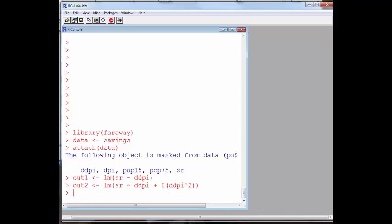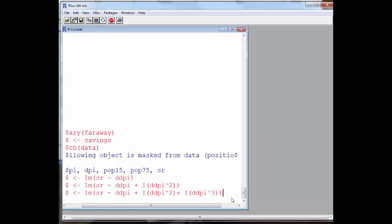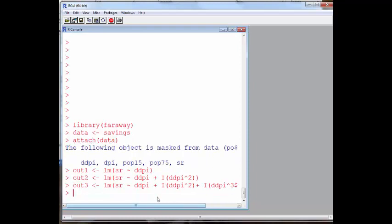I'm also going to make a cubic model. And I'll call this one OUT3. And this model will have four terms in it. It'll have a vertical intercept coefficient, a slope coefficient, a coefficient on the square term, and a coefficient on this cubic term.